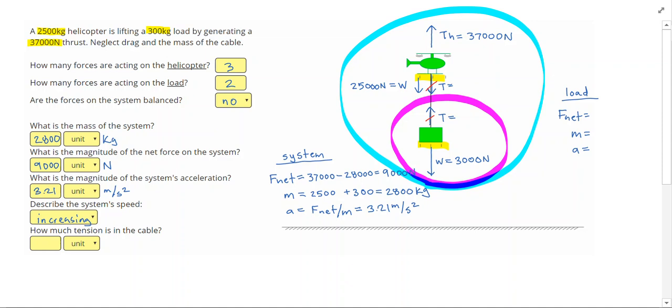So I know that the acceleration of the whole system, moving together, was 3.21 meters per second squared. Those objects are tied together, they have to have the same speed, acceleration, distance travel, all the motion quantities.